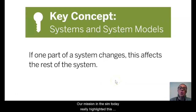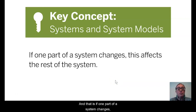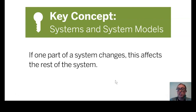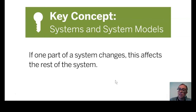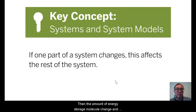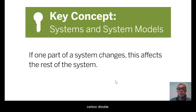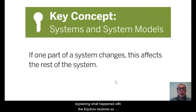Our mission in the SIM today really highlighted this important key concept about systems and system models: if one part of a system changes, this affects the rest of the system. Remember, an ecosystem is just one type of system that has a bunch of interacting parts. When we changed one of the inputs of our system in the process of photosynthesis, one of the outputs changed — if I change the amount of sunlight or the amount of carbon dioxide, then the amount of energy storage molecules changed. This key concept will be important in our work in explaining what happened with the Econauts' biodome. Pause the video and record this idea on your paper.